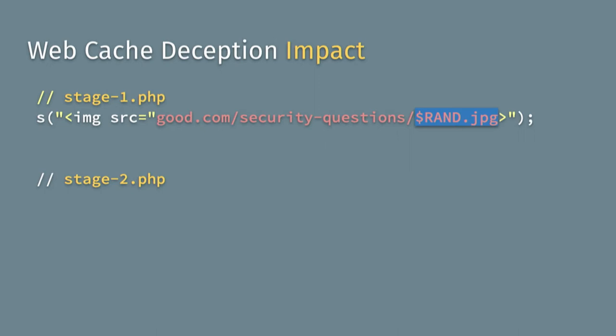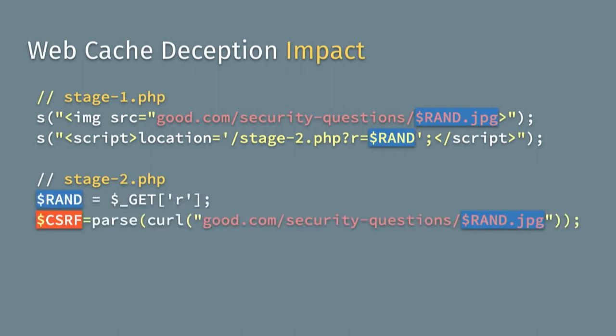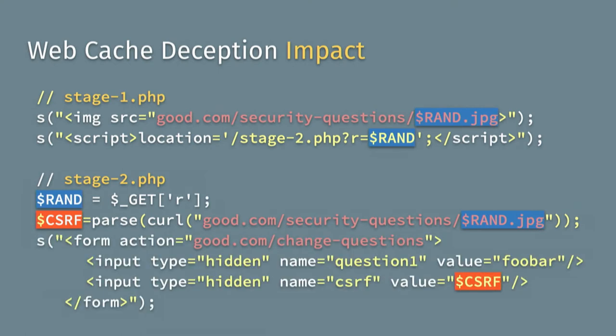You need a two-stage attack implementation. First, you trick the user into requesting your attacker-controlled website, which tricks the victim's browser into requesting a fake image URL — this triggers the web cache deception bug. Then you tell the victim to reach back on a different URL using the random identifier, buying time to go fetch the cached CSRF token. The second step is doing the actual CSRF attack, forcing the victim into visiting a specially crafted form with the leaked CSRF token to fully bypass CSRF protections.